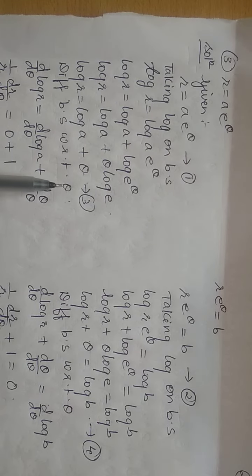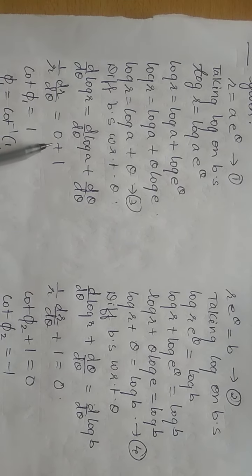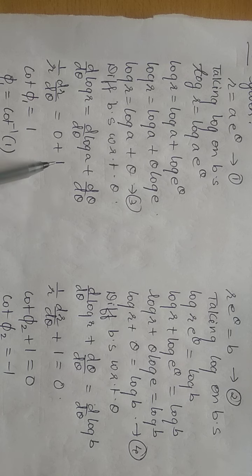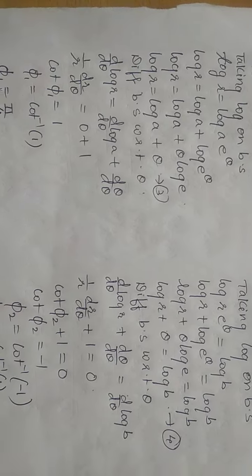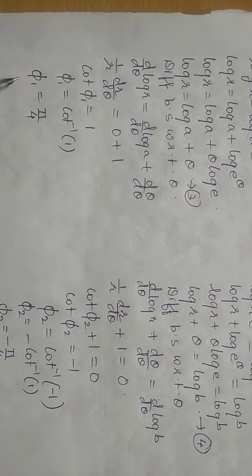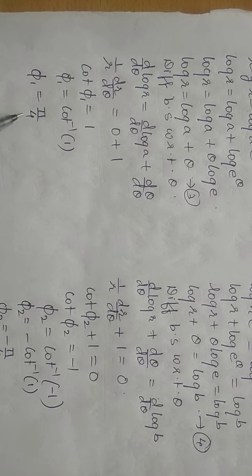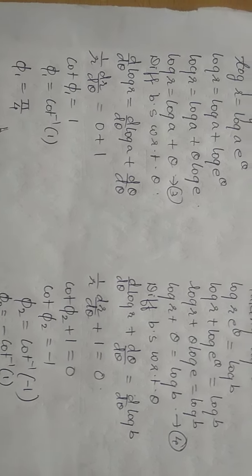Differentiating both sides with respect to θ: the derivative of log r is (1/r)·(dr/dθ), the derivative of log a is 0, and the derivative of θ is 1. So cot φ₁ = 1, meaning φ₁ = cot⁻¹(1) = π/4, since cot 45° = 1.